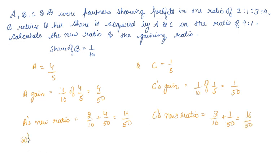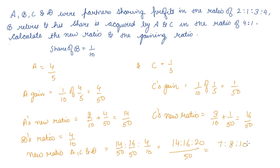D's ratio will remain the same as 4/10. The new ratio among A, C and D would be 14/50 : 16/50 : 4/10, which is 14:16:20 by taking 50 as LCM. So 7:8:10 by converting it into simplest form.